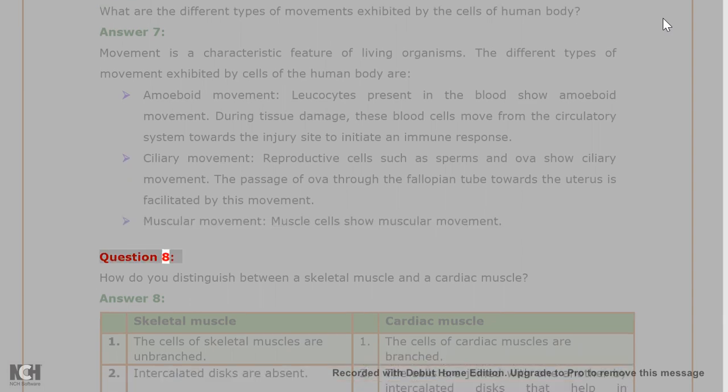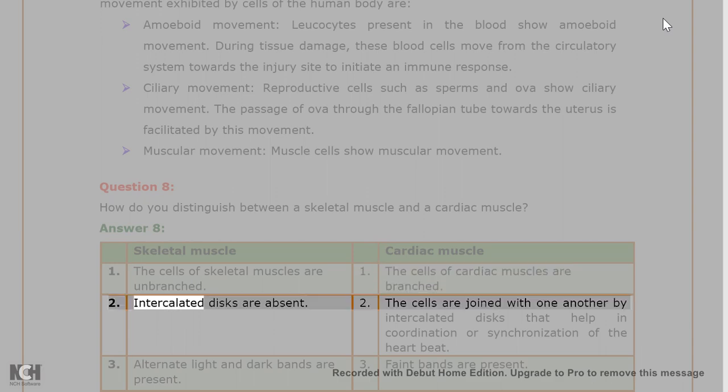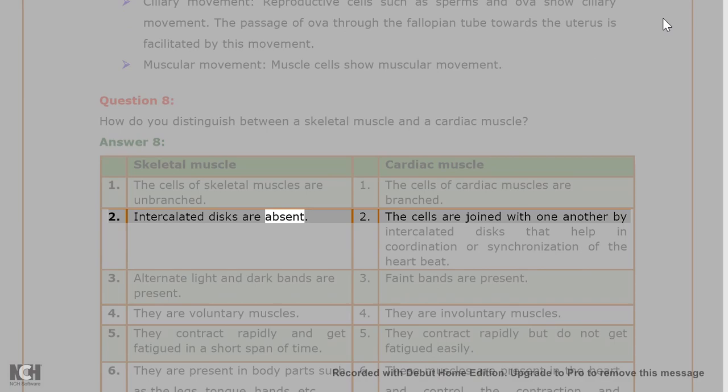Question 8. How do you distinguish between a skeletal muscle and a cardiac muscle? Answer 8. Skeletal muscle: 1. The cells of skeletal muscles are unbranched. 2. Intercalated discs are absent. 3. Alternate light and dark bands are present. Cardiac muscle: 1. The cells of cardiac muscles are branched. 2. The cells are joined with one another by intercalated discs that help in coordination or synchronization of the heartbeat. 3. Faint bands are present.